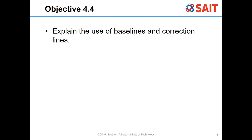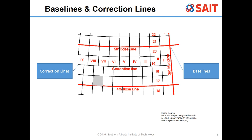Moving to the next objective: explaining the use of baselines and correction lines. We have these nice squares - townships broken up into sections, then into LSDs or quarter sections. But there's an issue: as we go north, lines of longitude are actually converging, making everything smaller and smaller. So it's not fair - a settler arriving at township 17 would have significantly more land than one at township 21.